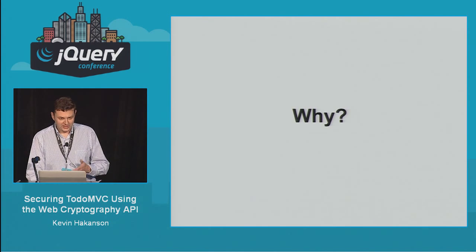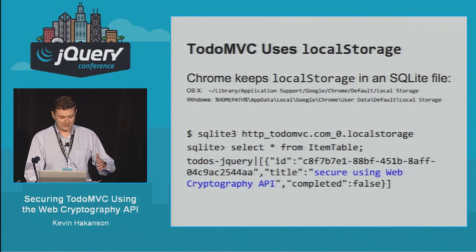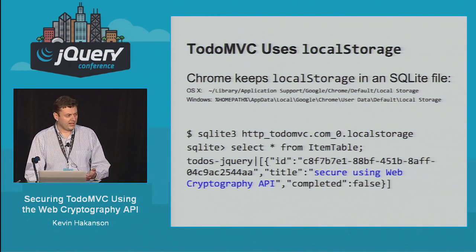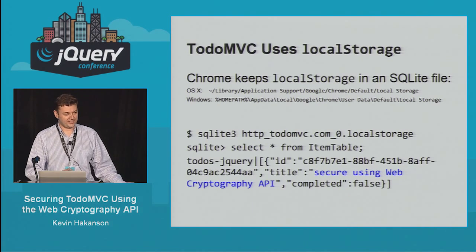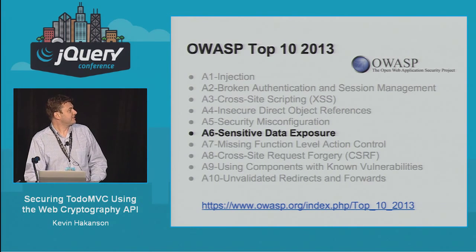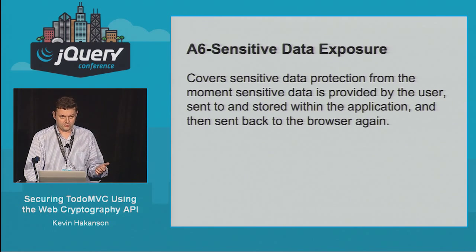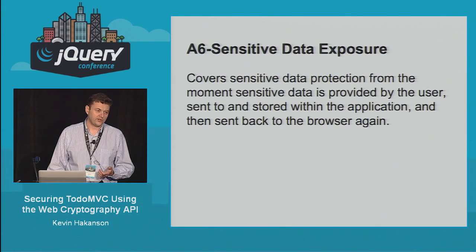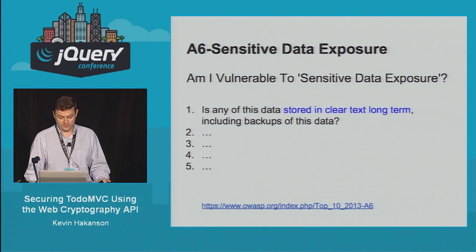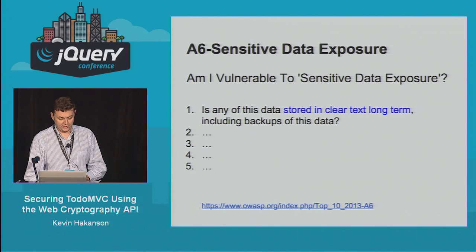So why do we even want to do this? Mostly because Todo MVC uses local storage, and Chrome keeps local storage in a SQLite file on your file system. If you open a command prompt and do a SELECT * FROM item table, you can see everything in plain text. The OWASP Top 10 has an item called Sensitive Data Exposure — it wants you to protect data from the moment it's provided by the user, stored within the application, and sent back to the browser. They ask: is it stored in clear text long-term? And from looking at the local storage file, the answer is yes.